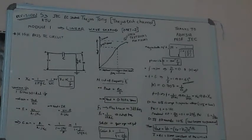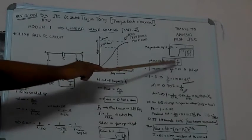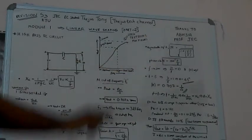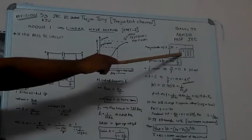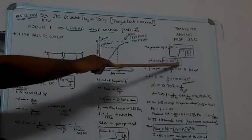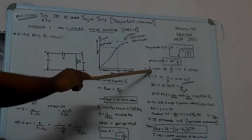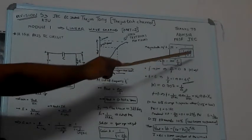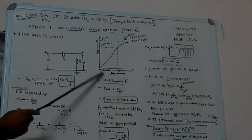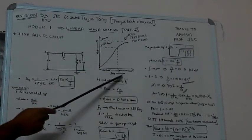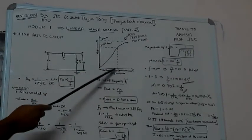Phase angle theta is equal to tan inverse of (f1/f). This is the magnitude and this is the phase angle. We will now take the conditions. F is the frequency that we give — high frequency or low frequency. F1 is the cutoff frequency.